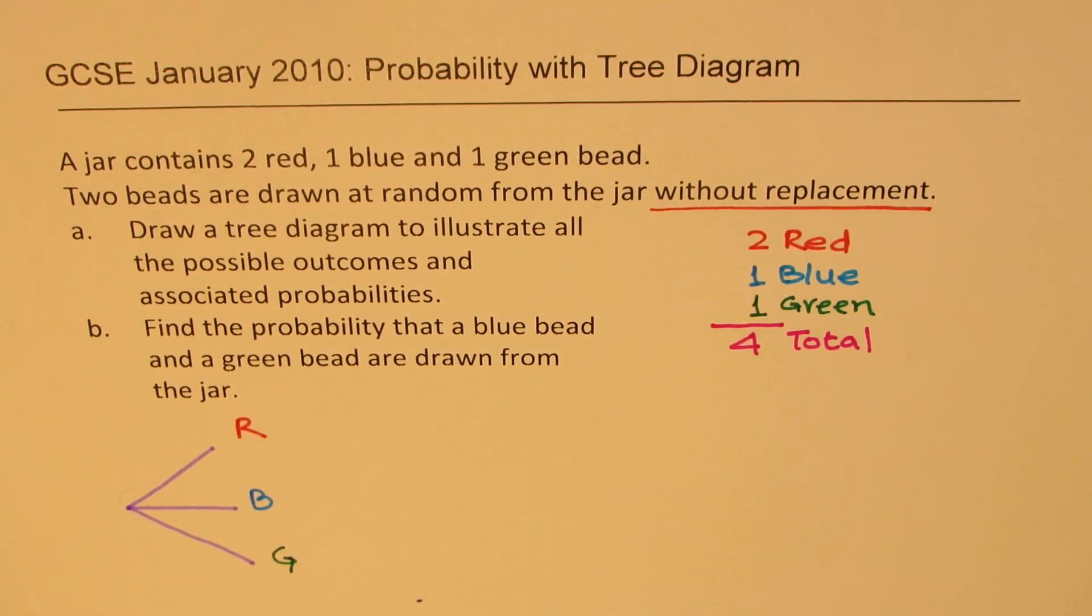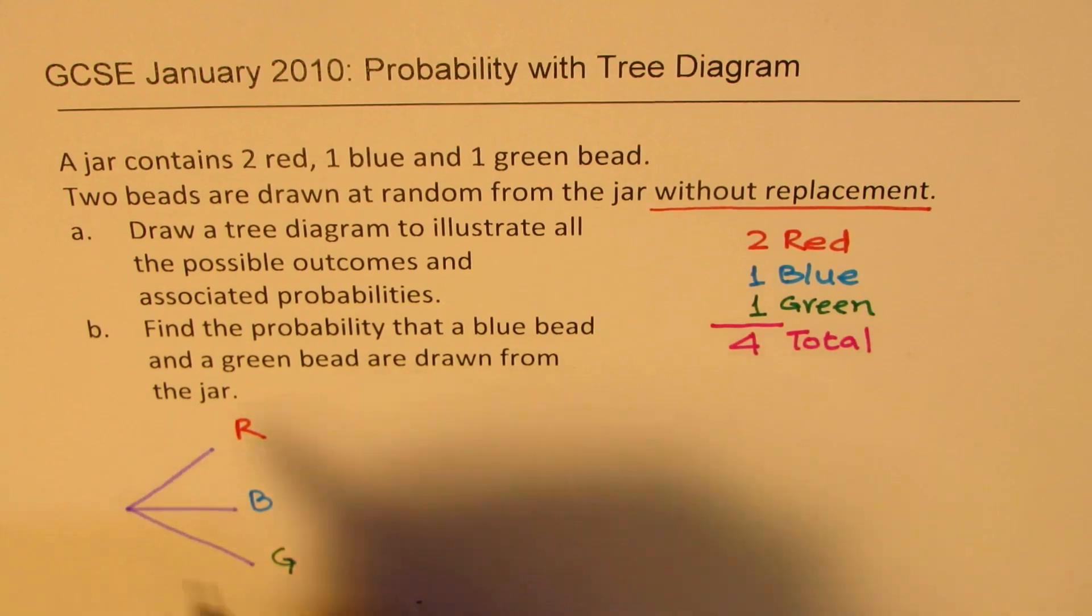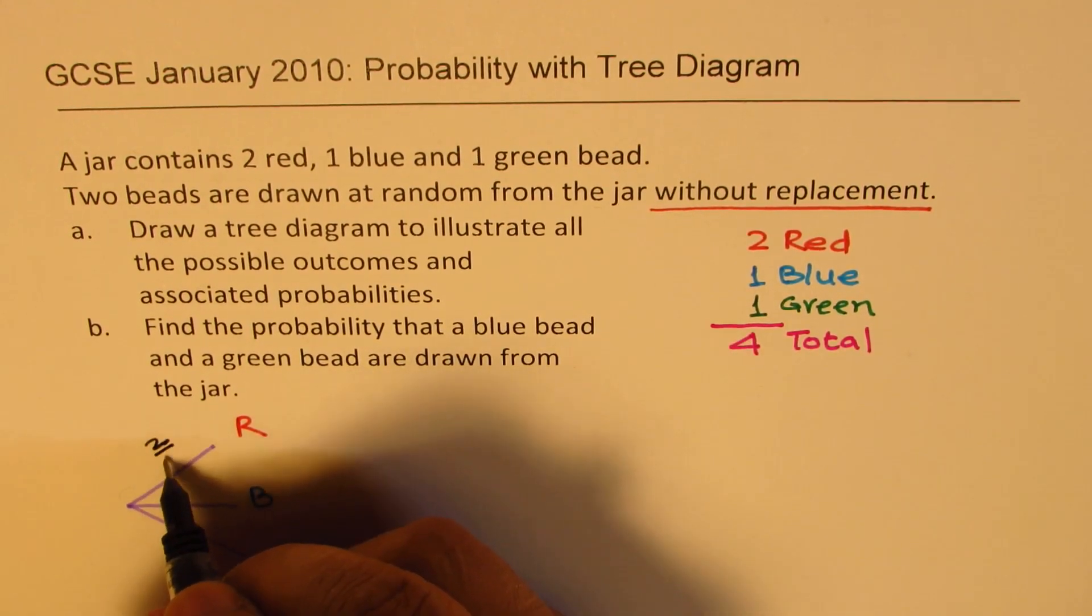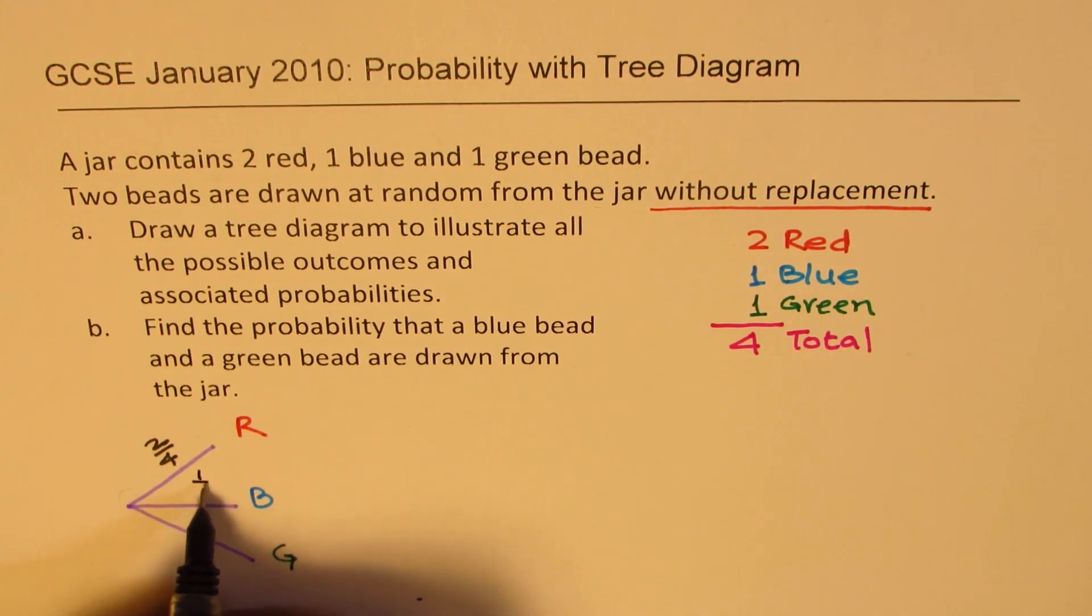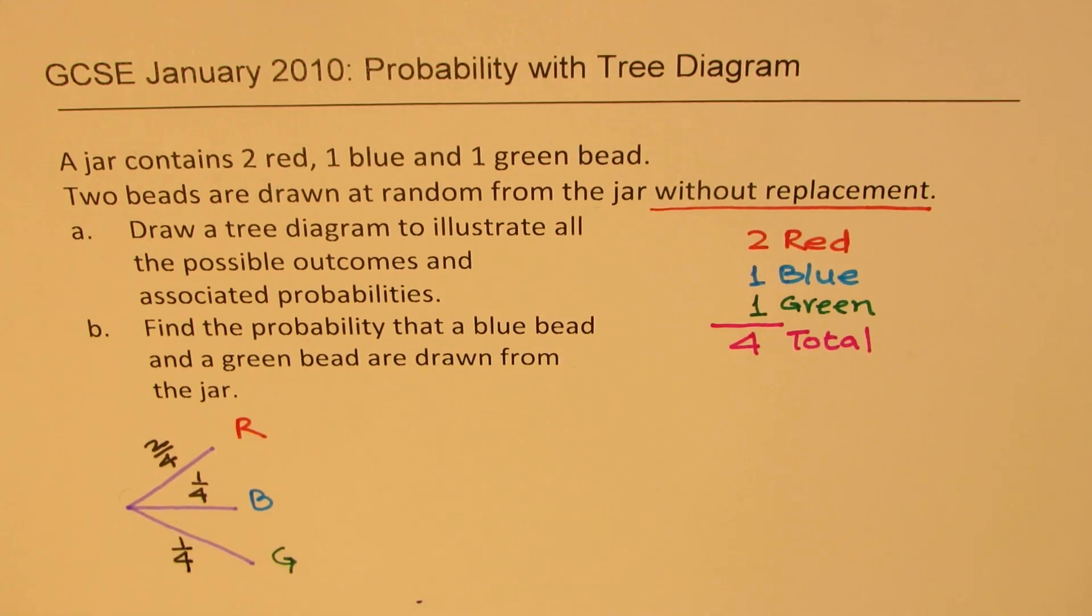Since there are two reds, what is the probability of getting red? Two reds out of four means 2/4. Only one blue means 1/4, and for green also it should be 1/4. So that part is clear.